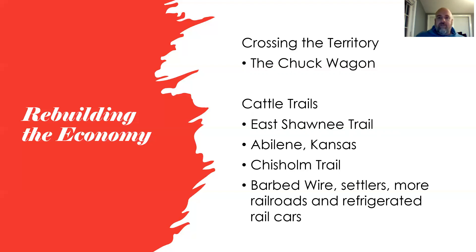Cattle drives required established trails. The Shawnee Trail was the first established cattle trail in Indian territory, running through the eastern part of the state. While not preferred long-term, it was used early on. Abilene, Kansas eventually became known as the cow capital of the world — hundreds of thousands of cattle were driven there every year to be shipped east by rail.